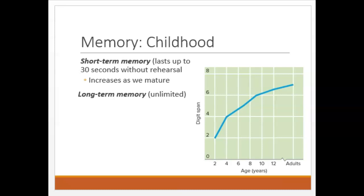As individuals move through childhood, we start to see improvements in memory. One type of memory, short-term memory, involves holding onto information consciously for up to 30 seconds without rehearsing it. For example, if I said repeat the following string of numbers — 8, 6, 7, 4, 2, 3 — you could probably repeat it back to me. Two- and three-year-old children can only repeat back two or three digits before losing their train of thought, but this slowly increases as we mature, eventually settling at around seven digits in adulthood.